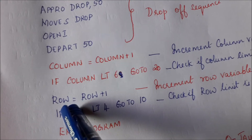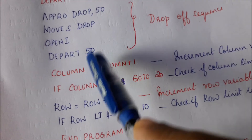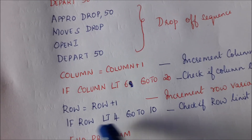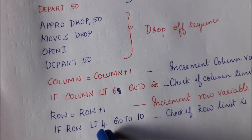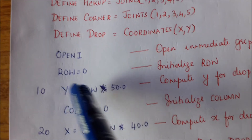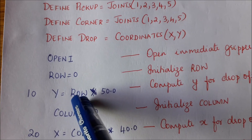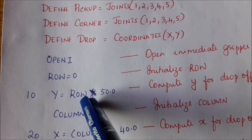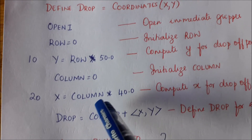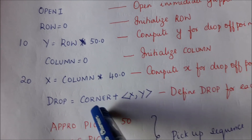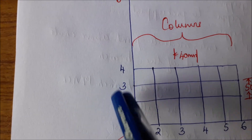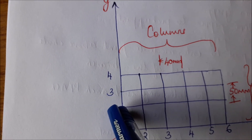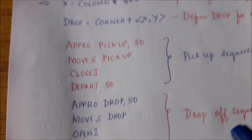Once the first row is completed, we move to the second row the same way we handled columns. Set row = row + 1. If row is less than 4 (since we start at 0: 0, 1, 2, 3), go to step 10. Step 10 computes y as row times 50; with row now equal to 1, y becomes 50. Reset column to 0, compute x as column times 40 giving 0. So drop becomes corner plus (0, 50), moving us to the start of the second row.